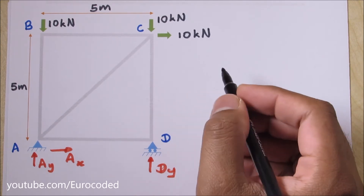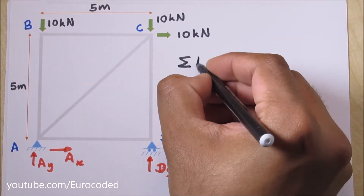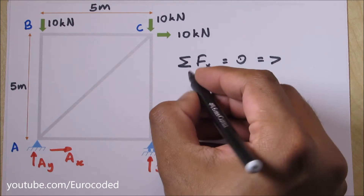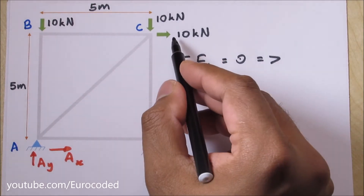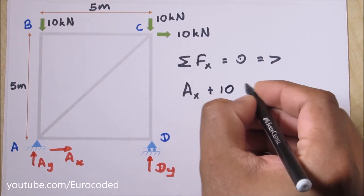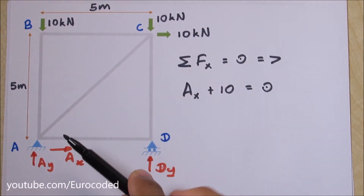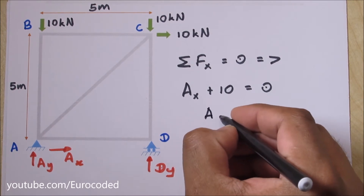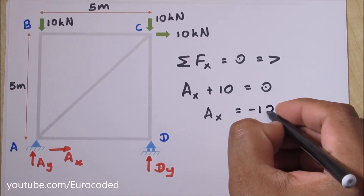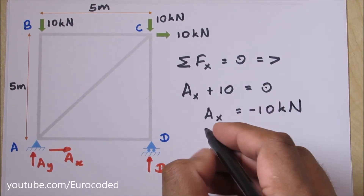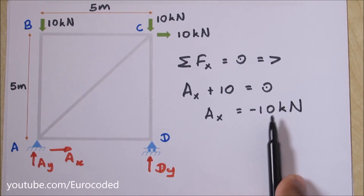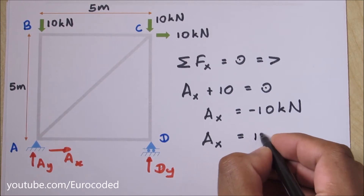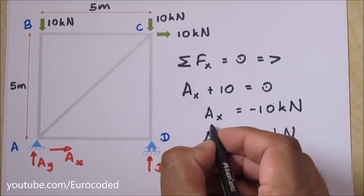Let's look at horizontal equilibrium first. We can write AX plus this 10 kilo Newton is equal to zero, because we don't have any other horizontal forces acting on this truss. This means AX is equal to minus 10 kilo Newton — the minus value means it's acting in the opposite direction, so AX is equal to 10 kilo Newton acting in this direction.